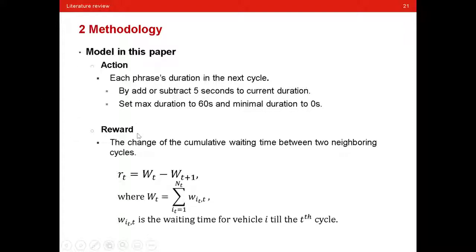And then, there is the reward definition. The reward is the change of the cumulative waiting time between two neighboring cycles. This reward is used to tell the agent how good it is doing the traffic light control.